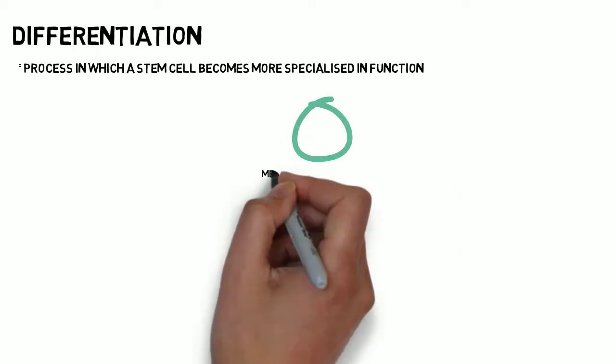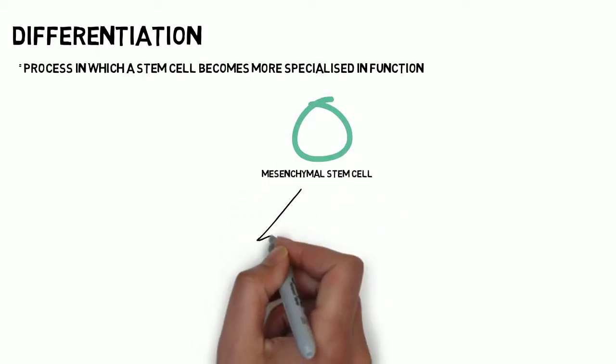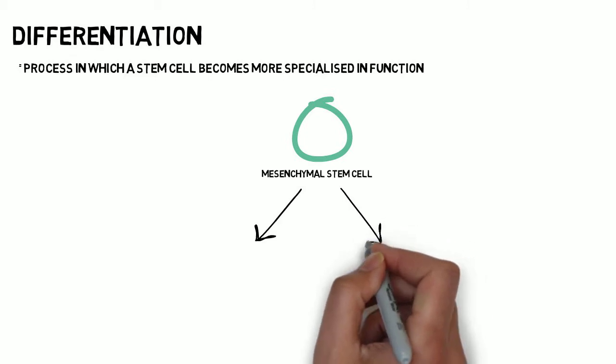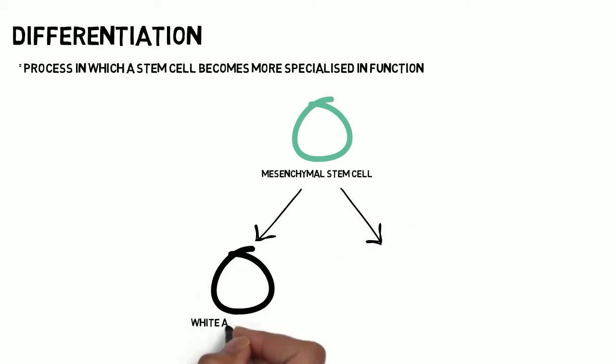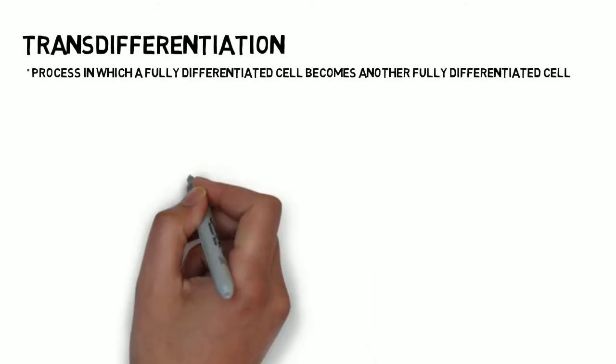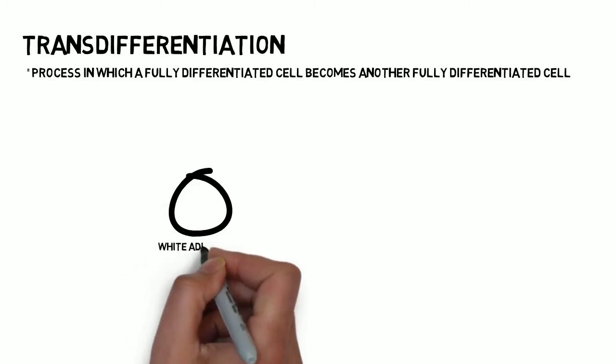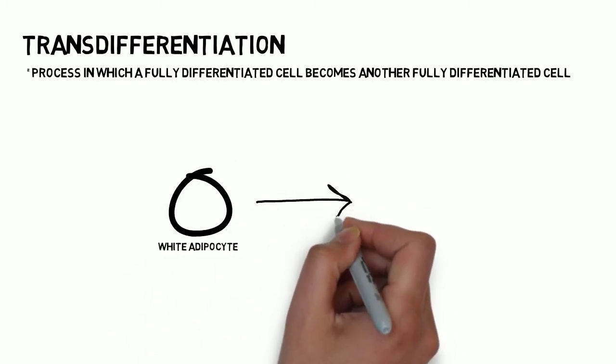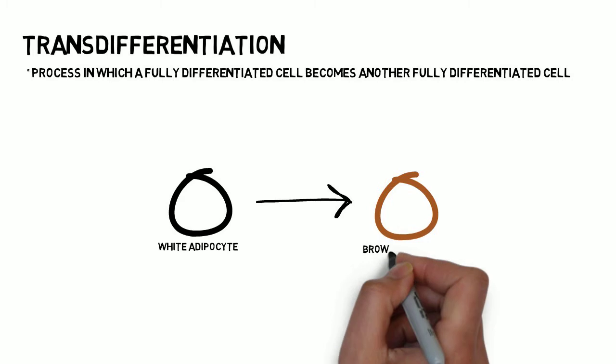Differentiation is the process in which a stem cell becomes more specialized in function. For example, mesenchymal stem cells differentiate into white and brown adipocytes in response to a variety of factors. Trans-differentiation is a way in which a fully differentiated cell can become another fully differentiated cell of another type.